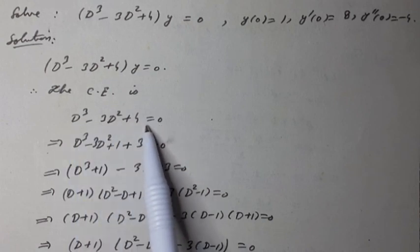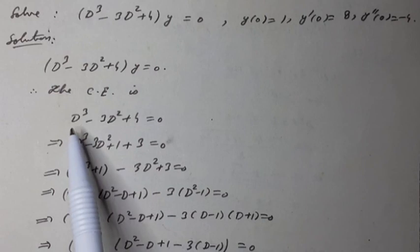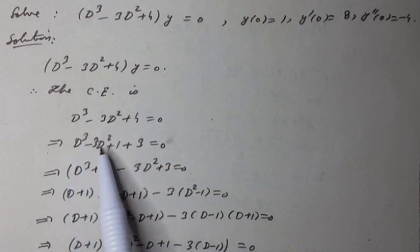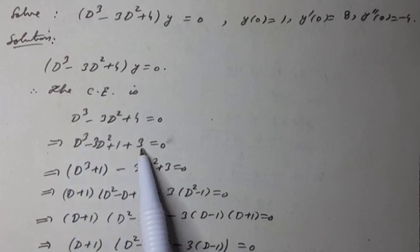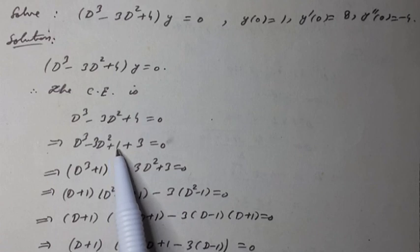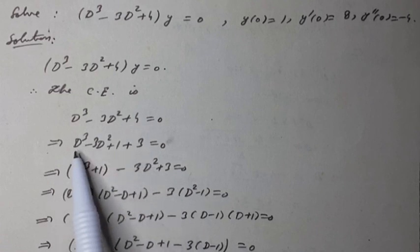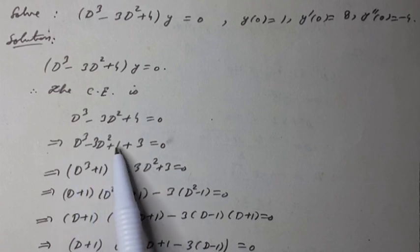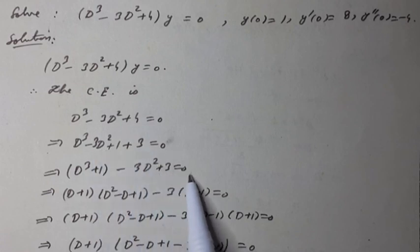Now we make its factorization to find the roots. It can be written as D³ minus 3D² plus 1 plus 3 = 0, which rearranges to D³ + 1 minus 3D² plus 3 = 0.